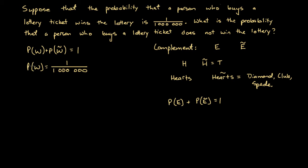So let's substitute probability of winning, one over a million, into this equation. So then we get one over a million, probability of winning, plus the probability of not winning, equals one. Well, we're looking for the probability of not winning. That's what we're trying to find. So let's subtract one over a million from both sides, so then we'll get probability of not winning equals one minus one over a million.